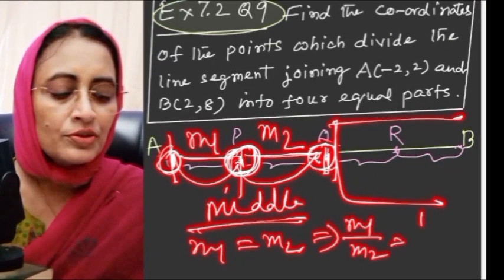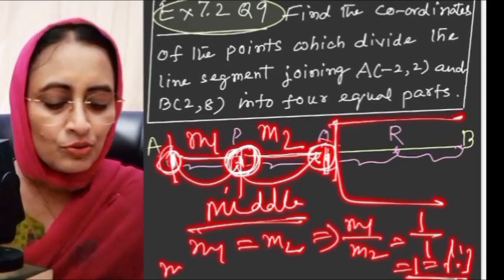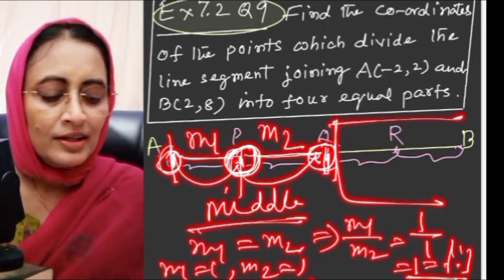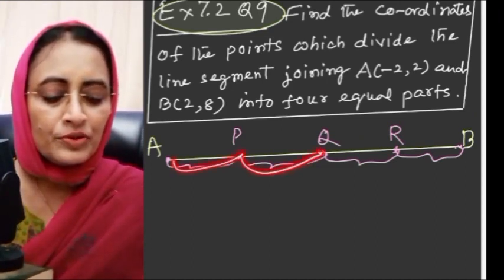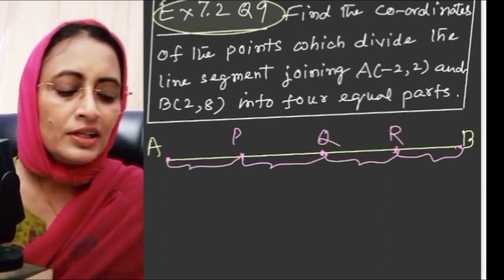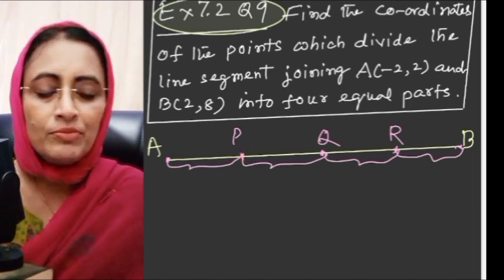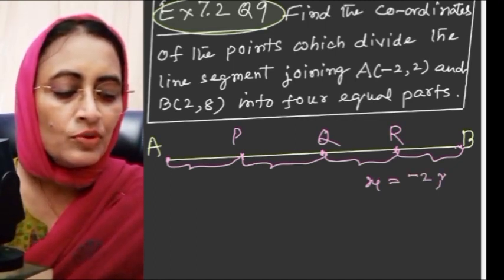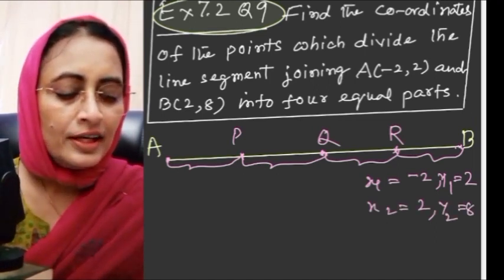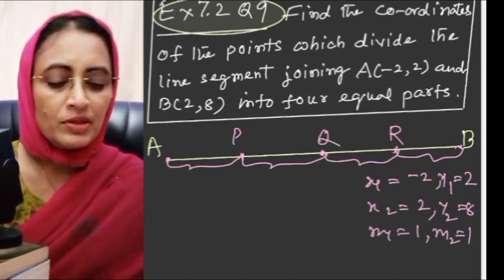Since m1 = m2, which implies 1/m2 = 1:1, meaning m1 = 1 and m2 = 1. We can use the midpoint formula. Our values are: x1 = -2, y1 = 2, x2 = 2, y2 = 8, m1 = 1, m2 = 1.